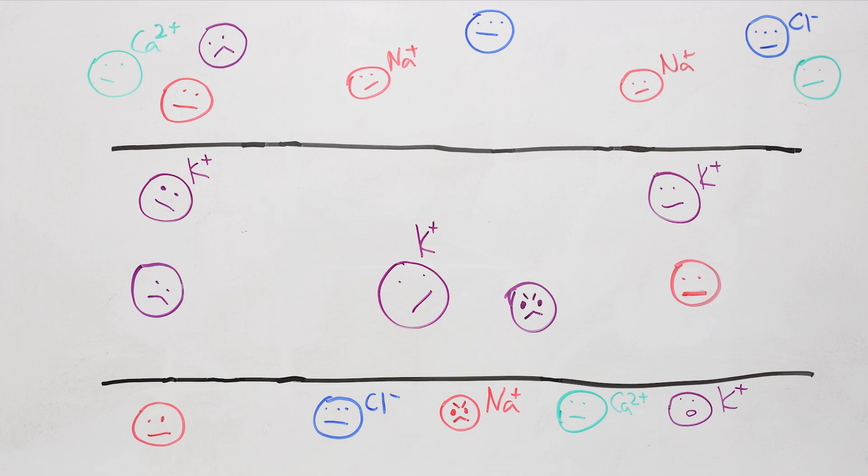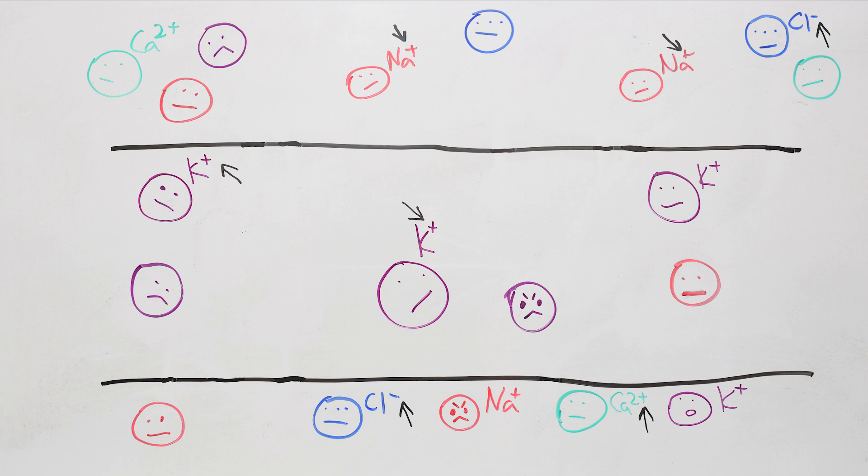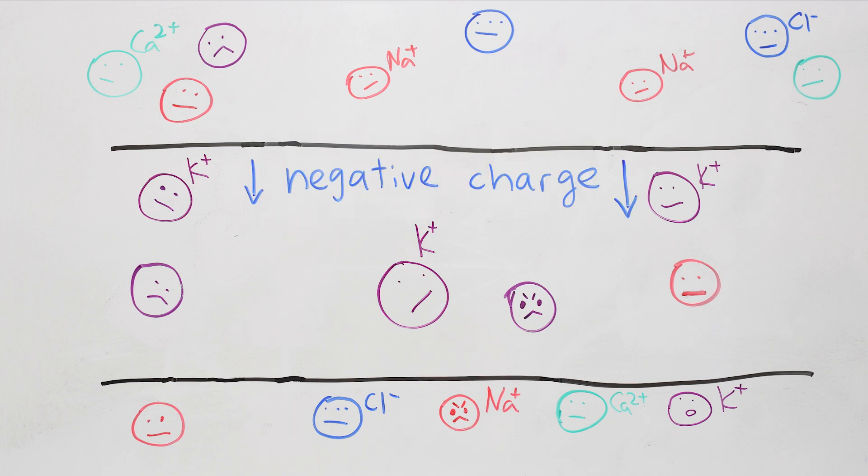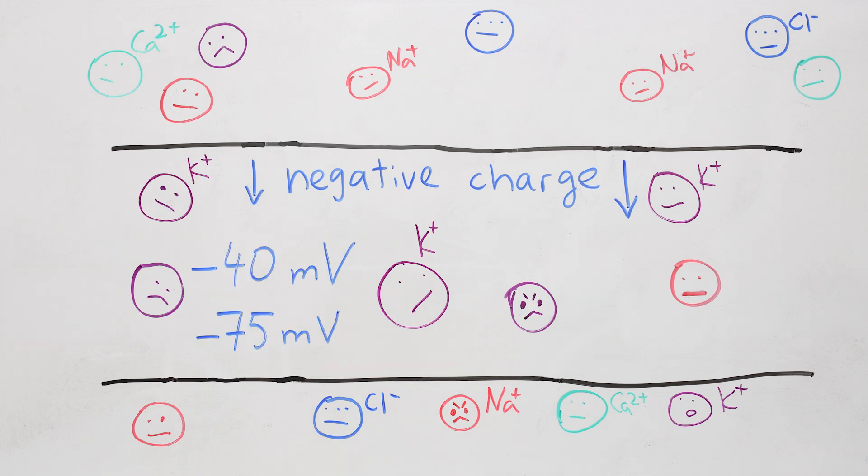All these particles carry an electric charge, either positive or negative. And on the whole, the neurons pump out more charge than they pump in. So inside the cell becomes more negatively charged than the outside, specifically by minus 75 to minus 40 millivolts. Alright, so this gives us our initial negative resting charge.